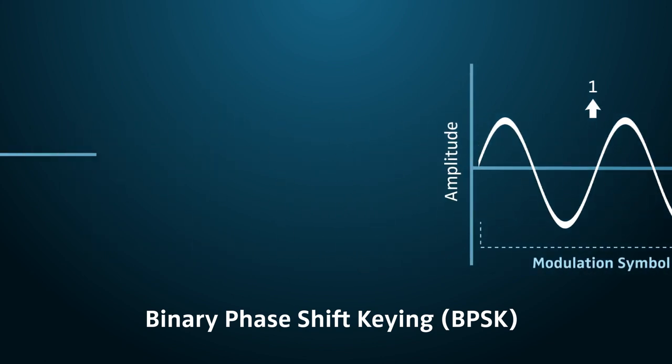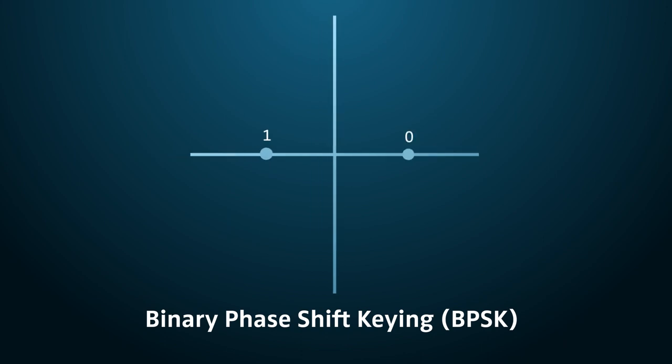In a constellation diagram, BPSK has two phase states positioned at 0 degrees and 180 degrees.